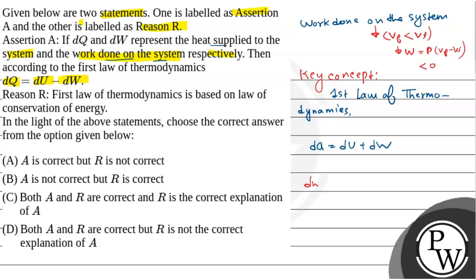That means dW is a negative term. That's why dQ equals dU minus dW.